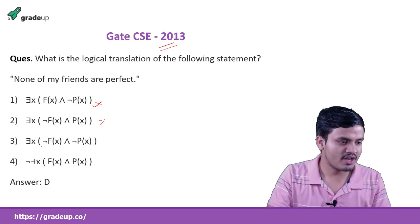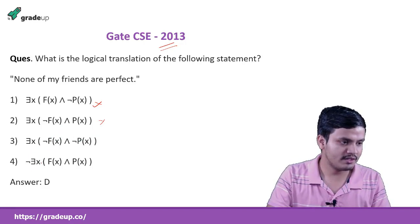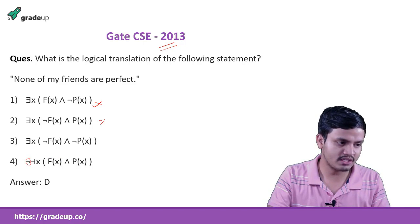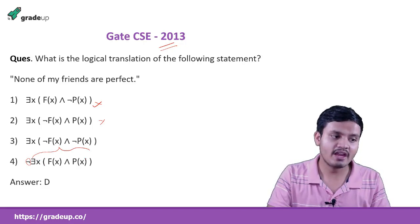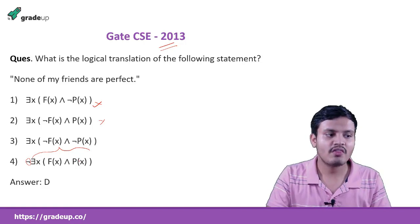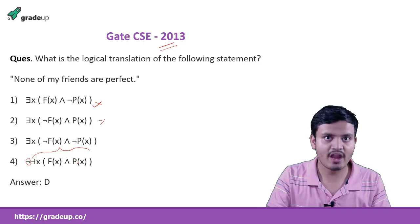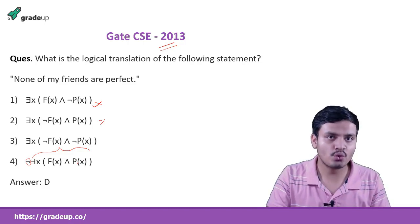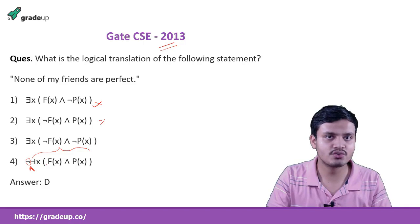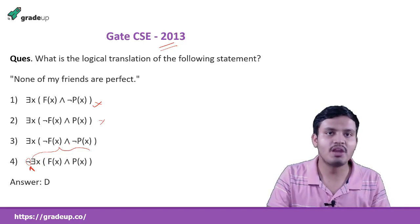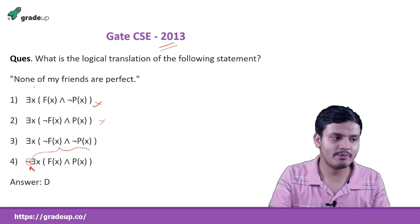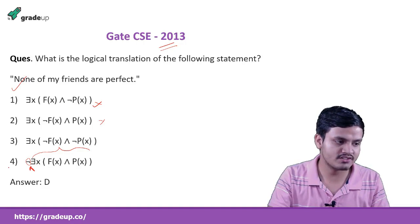Option C is also wrong. Option D says there exists an X such that X is your friend and X is perfect, and you take the negation of it — that means there does not exist any such friend that is perfect. That is the meaning of the sentence. So answer D is the correct one.